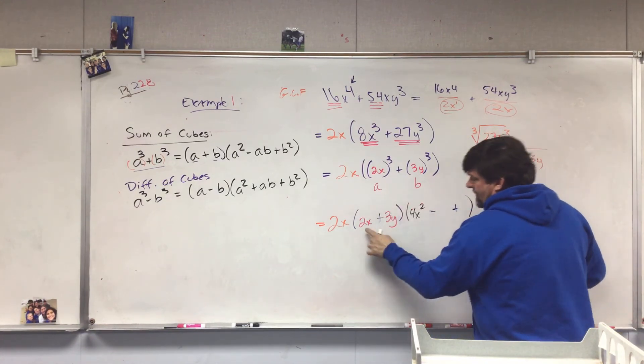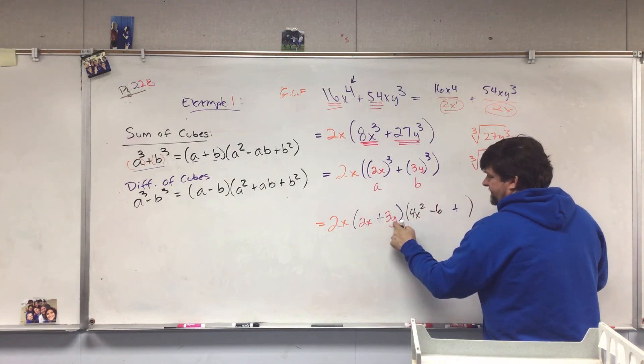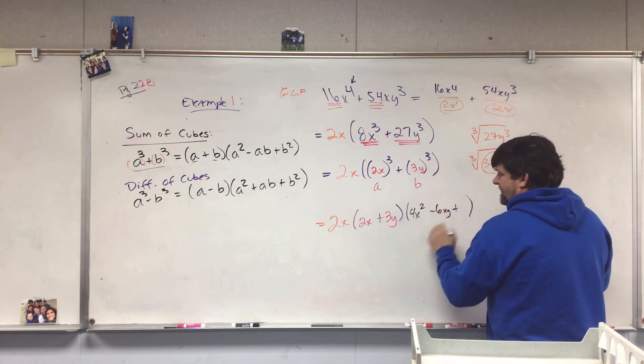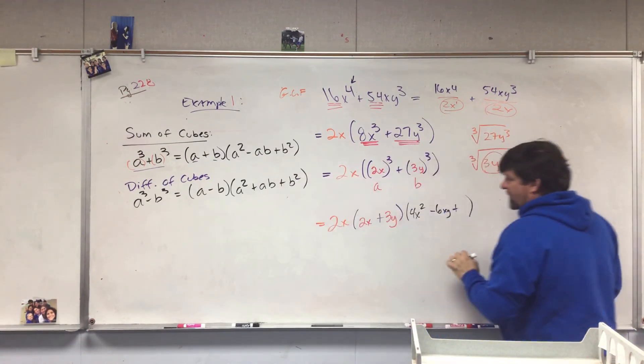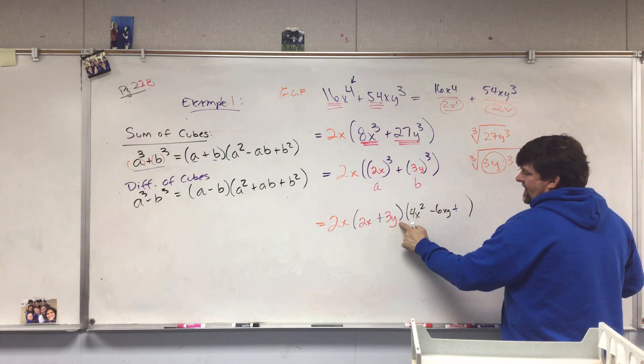a times b: 2 × 3 is 6, X × Y is XY. b²: 3 × 3 is 9, Y × Y is Y². And we have our answer.